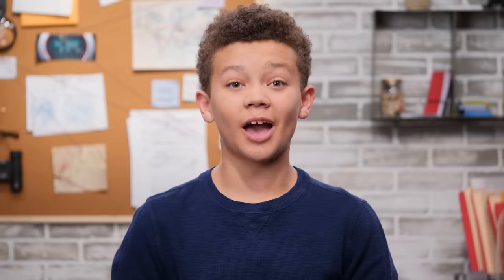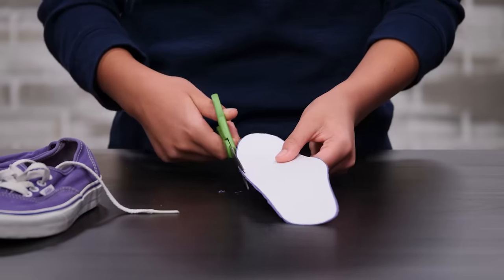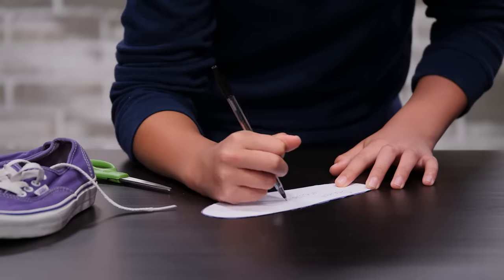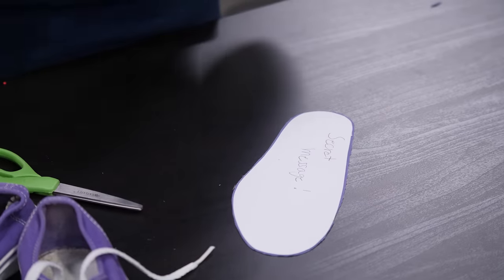Cut off the extra fabric. Trim the side so it will fit perfectly in the shoe. Write your message on the card stock side of the sole. I'm writing a secret message because I don't know the code to Izzy's box. Izzy will write the code here.